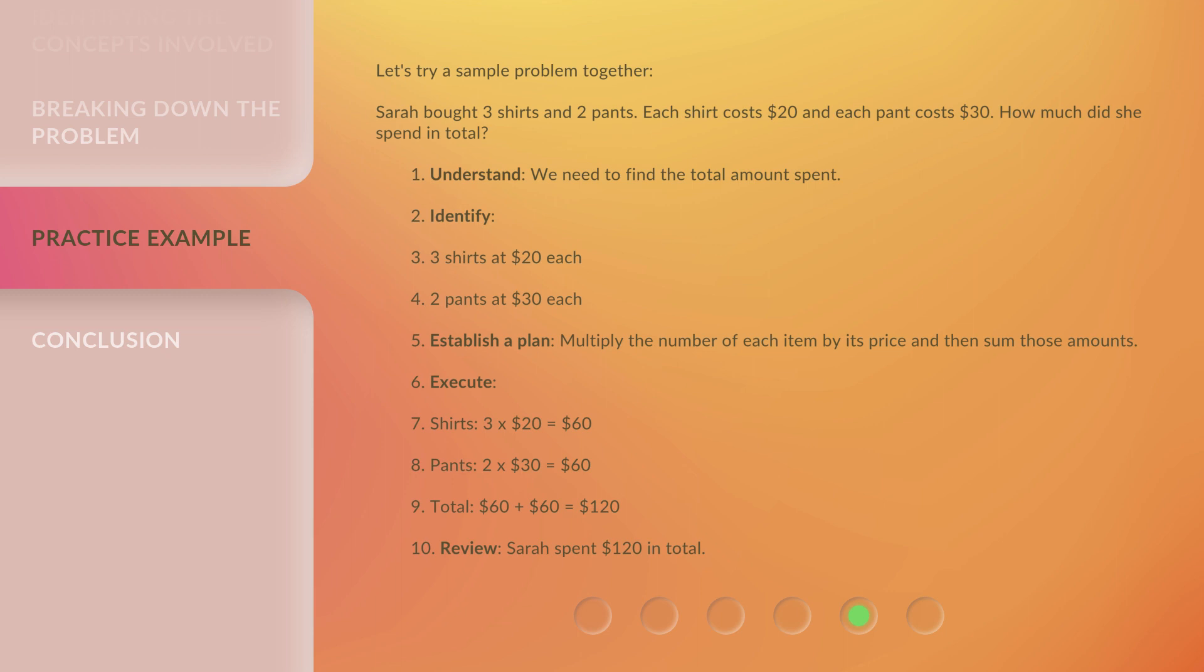Execute: Shirts: 3 × $20 = $60. Pants: 2 × $30 = $60. Total: $60 + $60 = $120. Review: Sarah spent $120 in total.